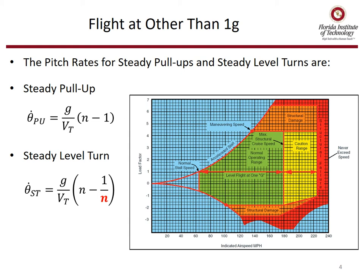The pitch rate theta-dot for a pull-up is g over the true airspeed times the load factor n minus 1. For a level turn, it's g over the true airspeed times n minus 1 over n. The diagram on the right shows that structure is important — we don't want structural damage, so we typically want to keep the load factor inside the green area and maybe extend slightly into the caution area, but definitely stay out of structural damage or failure.